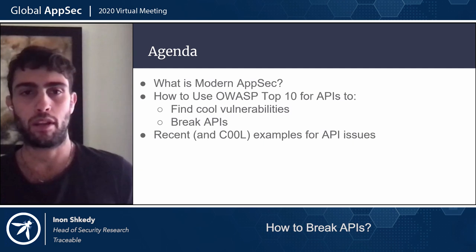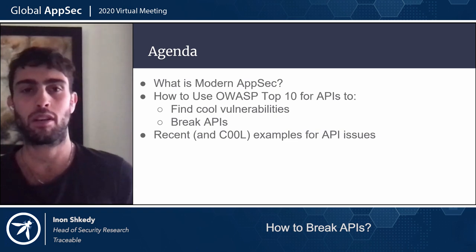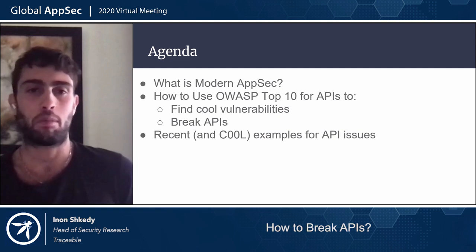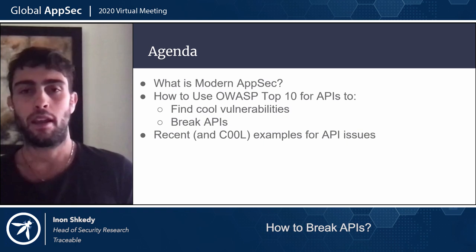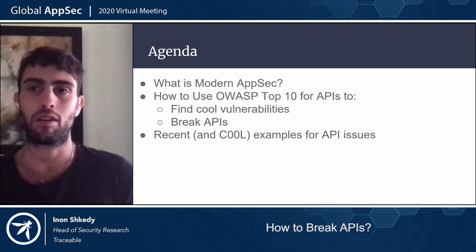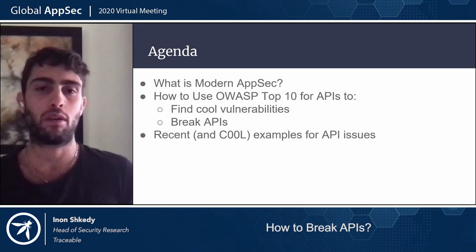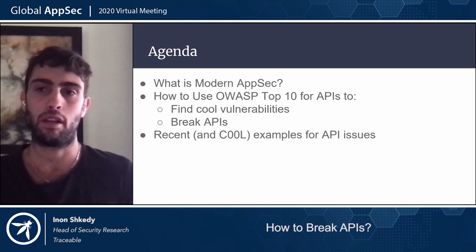The agenda for today: first, before we talk about application security and how you can leverage APIs to hack into applications, we'll understand what modern application security is and how it's different from traditional application security. Then we'll cover some of the OWASP top 10 for APIs, with emphasis on how to leverage these issues as a pen tester to find core vulnerabilities. And then we'll see some recent examples of API issues that happened in the last few months in large companies.